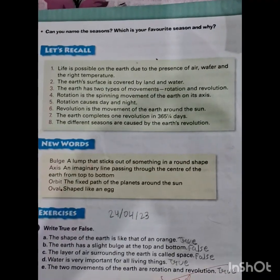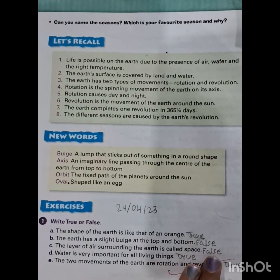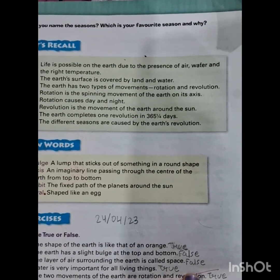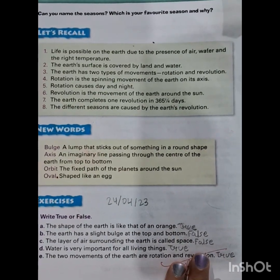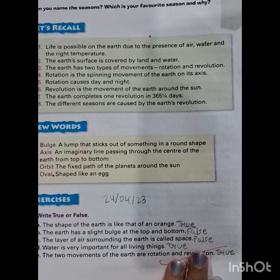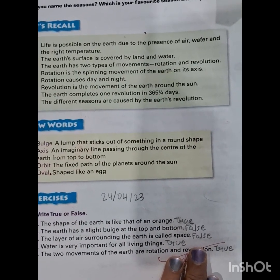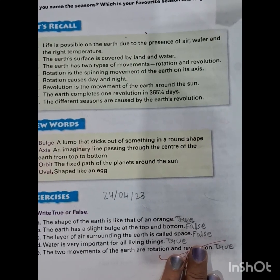So here is your exercise. First is true and false. First: the shape of the earth is like that of an orange — true, I have explained you in the previous video. B: the earth has a slight bulge at the top and bottom — true.